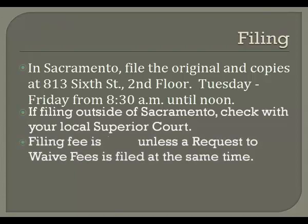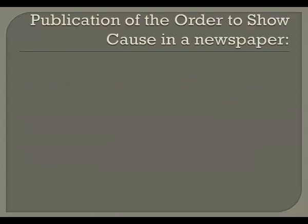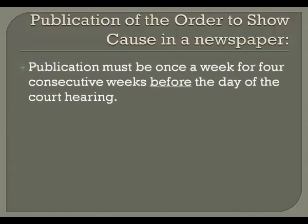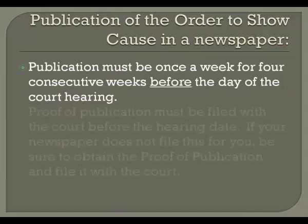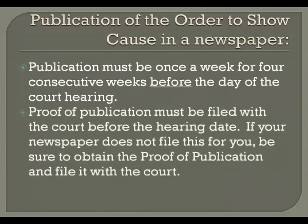The filing fee you will be charged when you file your request is $435, unless a request to waive fees is filed at the same time. The court will keep the original and stamped copies of the documents and return the stamped copies to you. Your next step is to publish the order to show cause in a newspaper. The publication must be once a week for four consecutive weeks before the date of the court hearing. The proof of publication must be filed with the court before the hearing date. If your newspaper does not file this for you, be sure to obtain a copy and file it with the court.